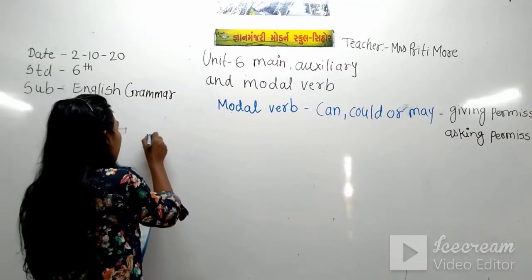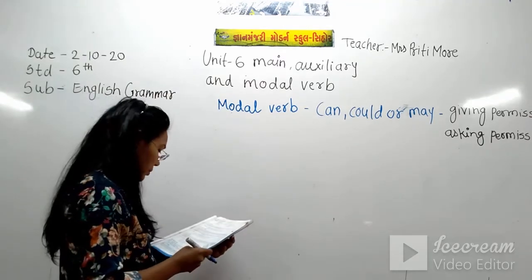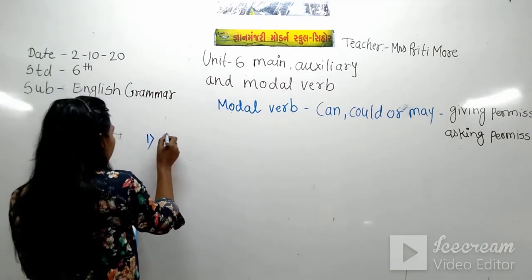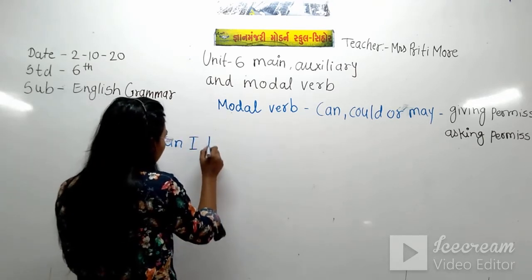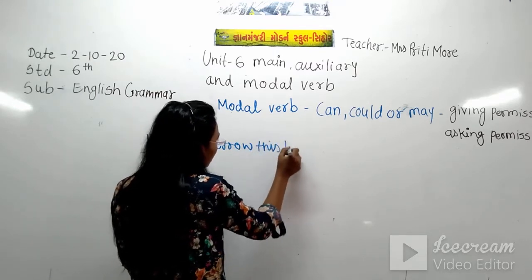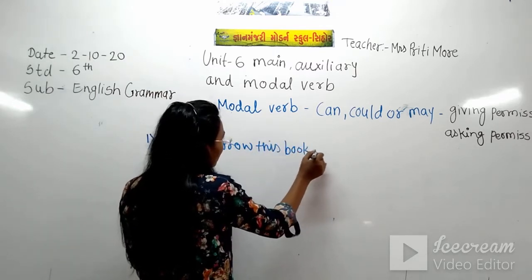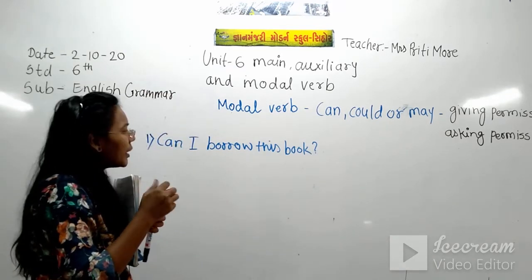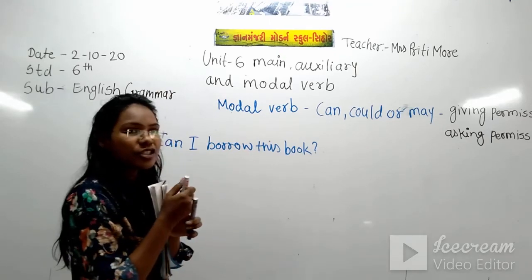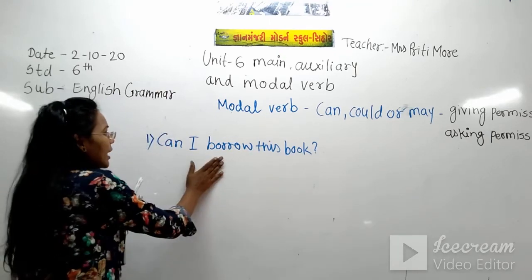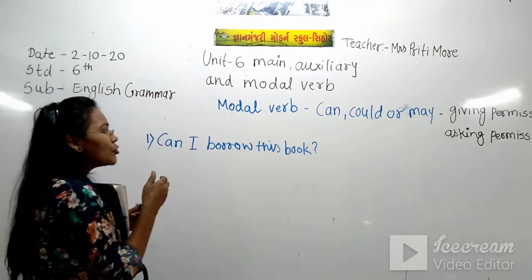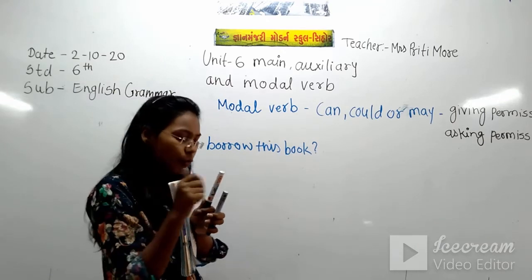The first example: 'Can I borrow this book?' Here, can is used for asking permission. The answer would be: 'Yes, you can borrow it.'